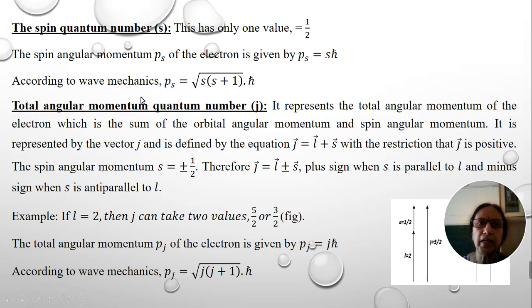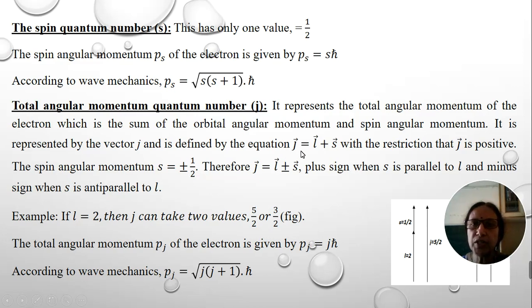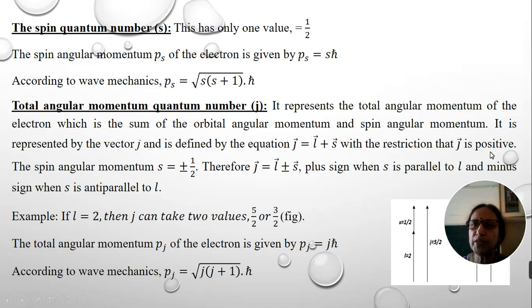Since the electron has both orbital motion and spin motion, the total angular momentum of the atom is given by the vector sum of the orbital quantum number and the spin quantum number, known as the total angular momentum quantum number j. If s is parallel to L, then j = L + s; if s is anti-parallel to L, then j = L − s, with the restriction that j is always a positive value.